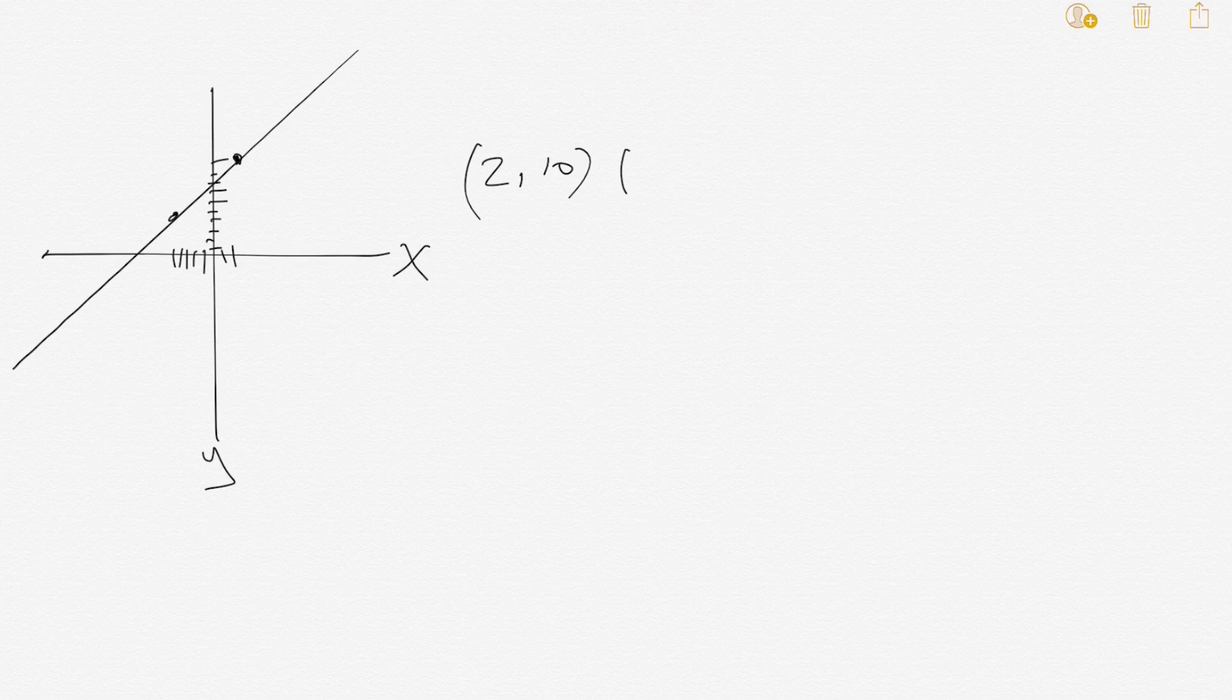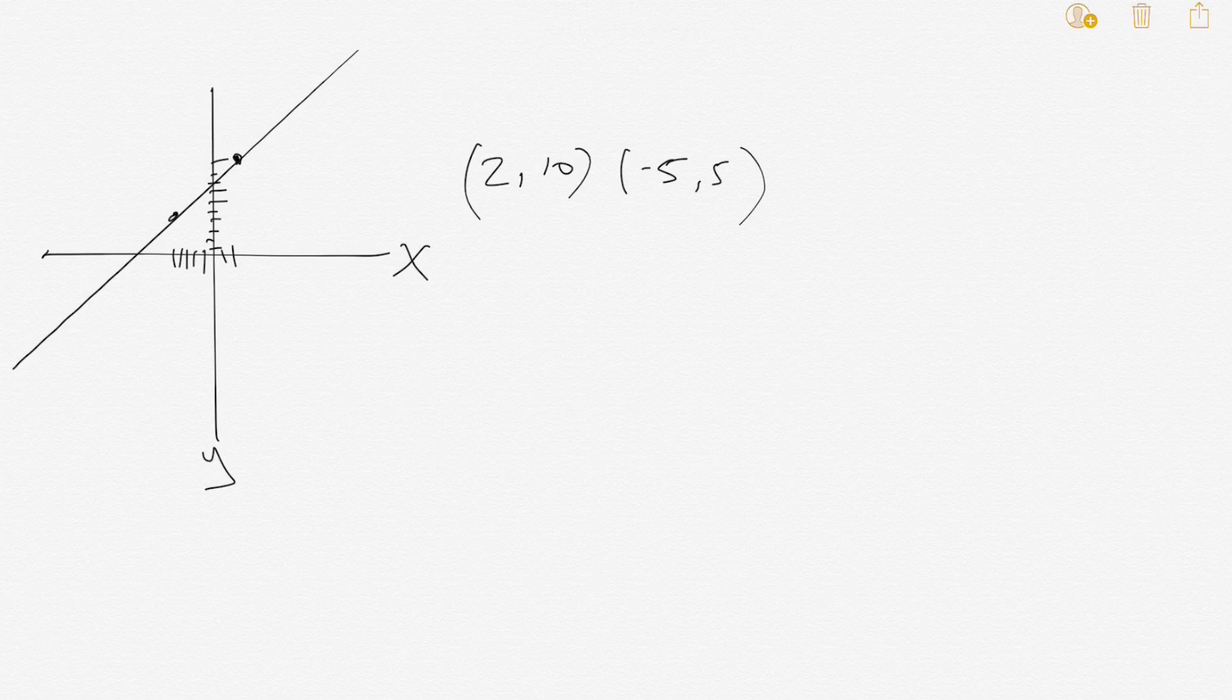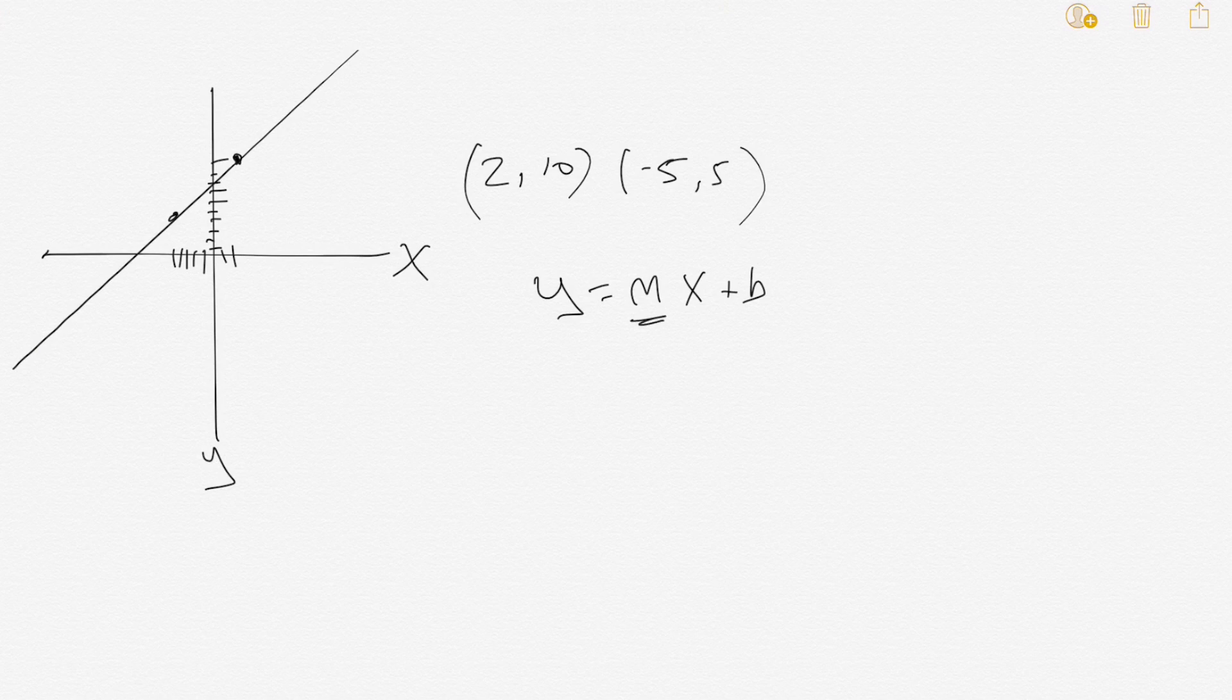The two points again are (2,10) and (-5,5). Now, the line formula is y equals mx plus b. The m is the slope and the b is the y-intercept.